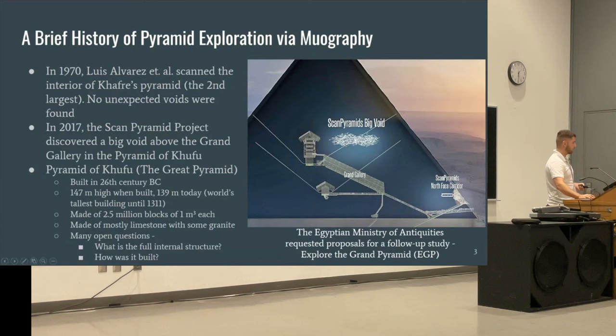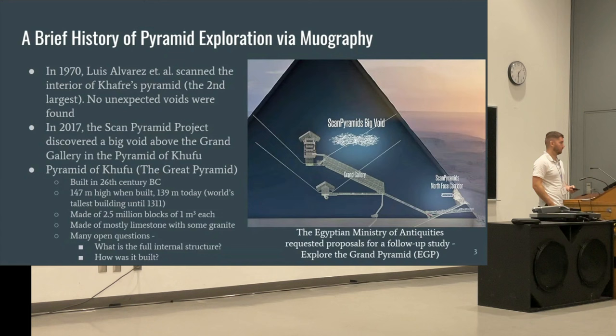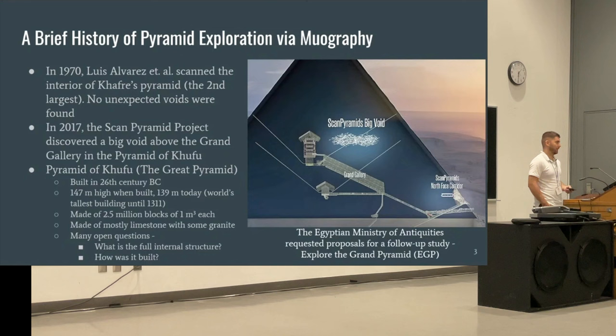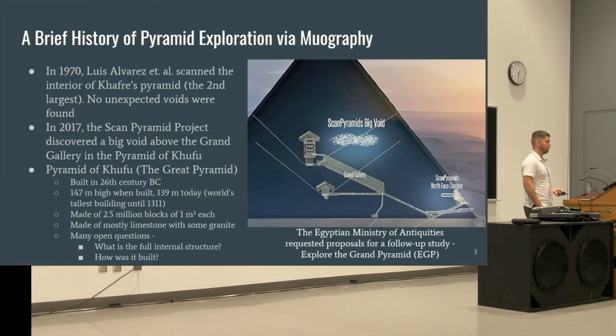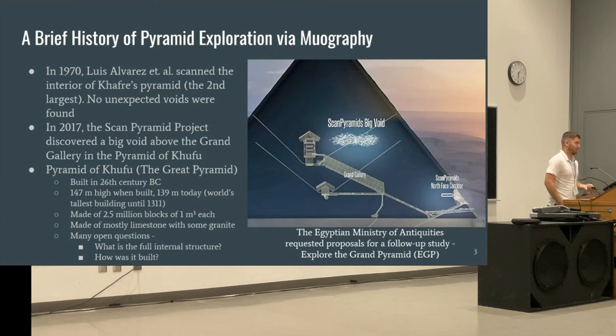Some quick details about the Great Pyramid: it was built in the 26th century BC, was 147 meters high when built, and remained the tallest building for several millennia until 1311. It's made up of about 2.5 million blocks, each roughly one cubic meter, mostly limestone with some granite. There are many open questions about its full internal structure, how it was built, and of course nowadays using dynamite to probe it is frowned upon.